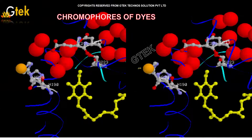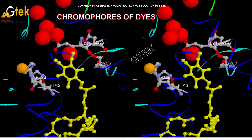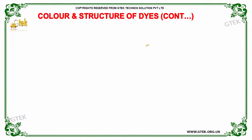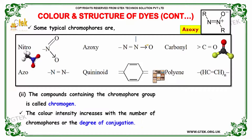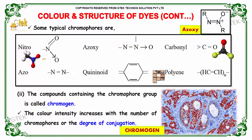Now let us discuss about chromophores of dyes. Some typical chromophores are Nitro, Azo, Azoxy, Quinonoid, Carbonyl, and Quinoline. Such compounds containing the chromophore group are called a chromogen. The color intensity increases with the number of chromophores or the degree of conjugation.